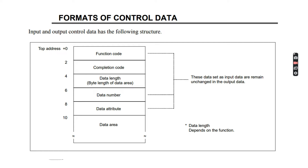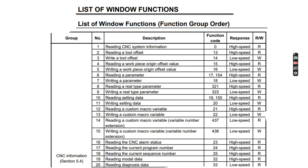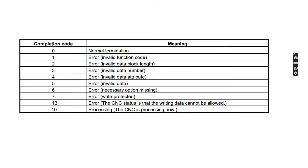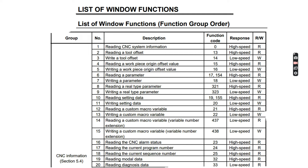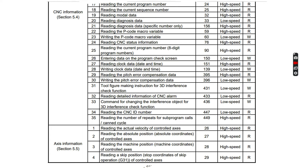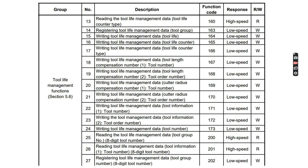The entire list of function codes is defined in the manual — you need to refer to it. If you are reading setting data, you need to write function code 19. If you are reading a custom macro variable, you need to write function code 21. If you are reading diagnostic data, function code 33 is used. Similarly, there are many codes for CNC information, access information, tool management related data — you can read or write all this. The full list is given here and you can refer to the manual for detailed descriptions.